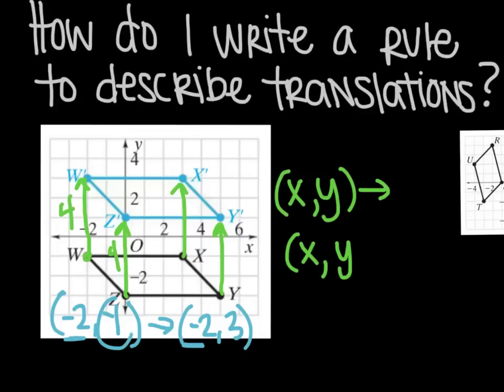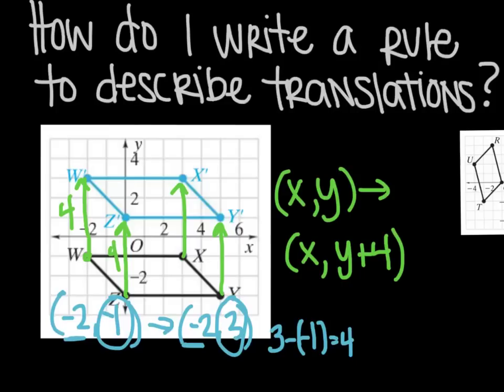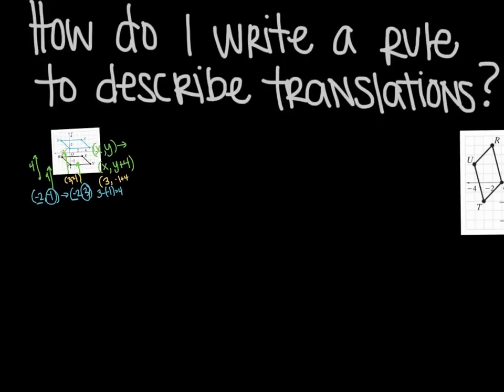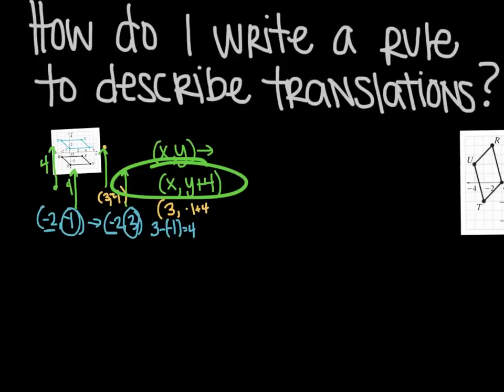And then to describe Y, if I look here, Y went from -1 to 3. So I want to know the difference of the two. So I'm going to take 3 minus (-1). Because we want to do the difference of the two. And that's going to give me an answer of 4. So it changed 4, which means I'm going to say Y plus 4. That should work. And I can double check it with another coordinate. Let's pick X. X was (3, -1). So if now that means that my new point should be (3, -1 + 4), which would be just 3. And I can check to make sure that that's right, which it is. It does end on 3. So I know I wrote my notation correctly.